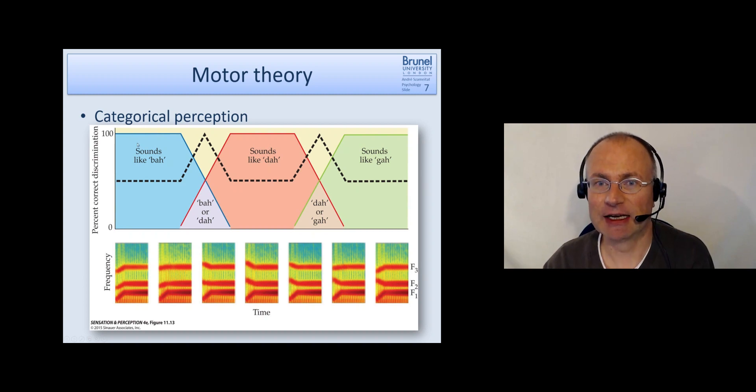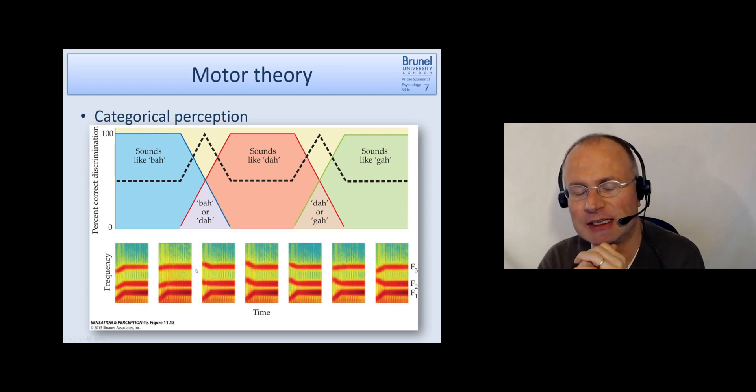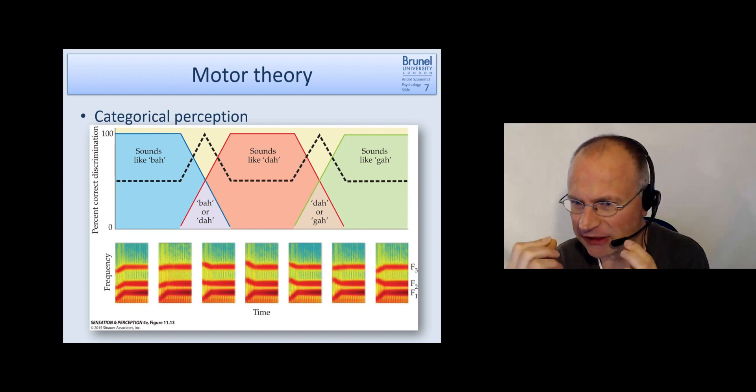Now what happens with the categorical perception is we always hear a clear ba, ba, ba, then we have a transition stage where we either hear ba or da and then we always hear da. This shows that such fine grained manipulations which we usually are quite good at perceiving. If you think about music or other things we can pick up very small detailed differences in the acoustic signal. But in the case of speech it seems to be really categorized, so either this or that.